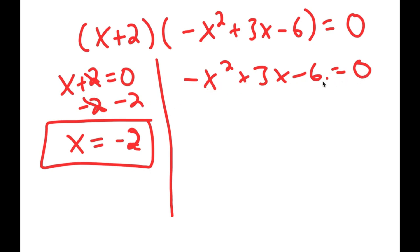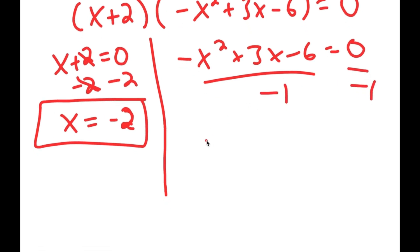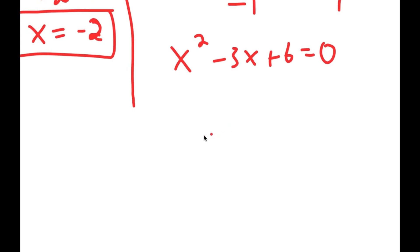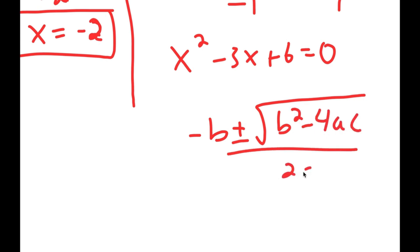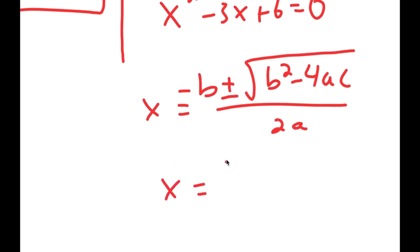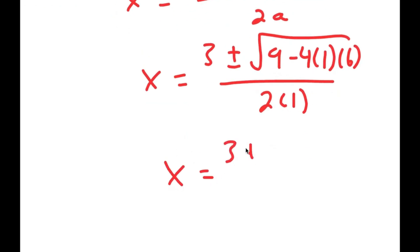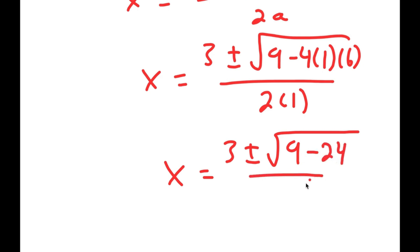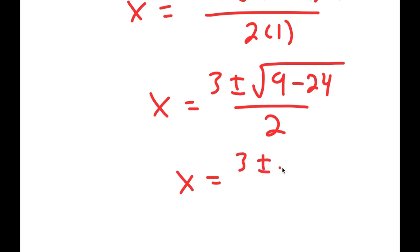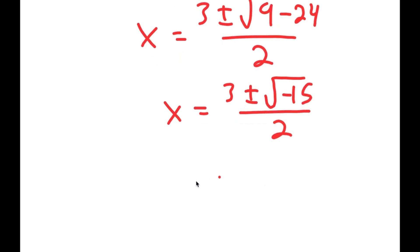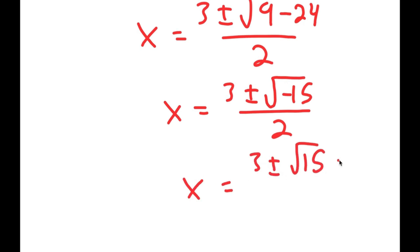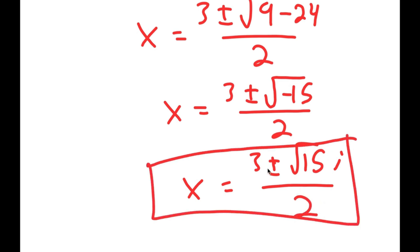Now for negative x squared plus 3x minus 6 is equal to 0, I can divide both sides by negative 1, so I get x squared minus 3x plus 6 is equal to 0. To solve this quadratic equation I can use the quadratic formula, which is negative b plus or minus the square root of b squared minus 4ac all over 2a. So I get 3 plus or minus the square root of 9 minus 4 times 1 times 6 all over 2 times 1, which equals 3 plus or minus the square root of negative 15 over 2, which is equal to 3 plus or minus the square root of 15 times i over 2. So these are two other solutions to my equation.